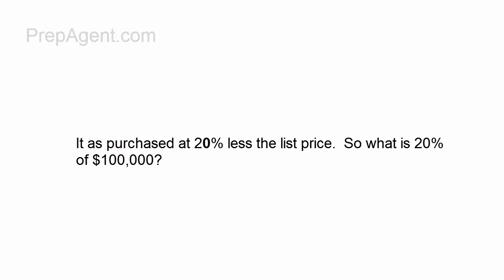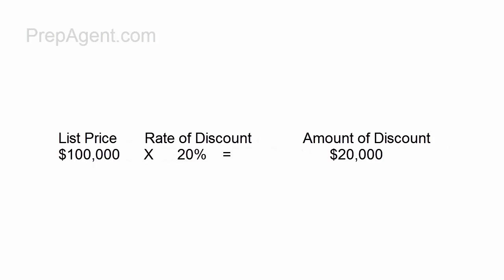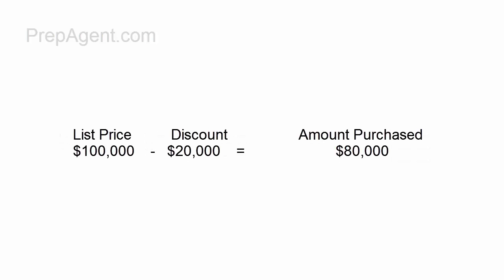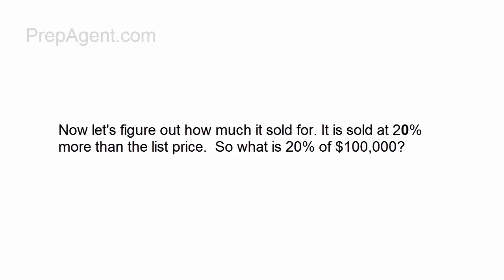It was purchased at 20% less than the list price. So what is 20% of $100,000? $100,000 times 20% is $20,000. We subtract $20,000 from $100,000, and the purchase price is $80,000.